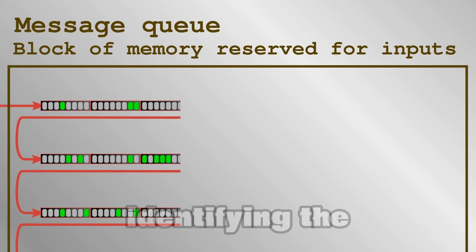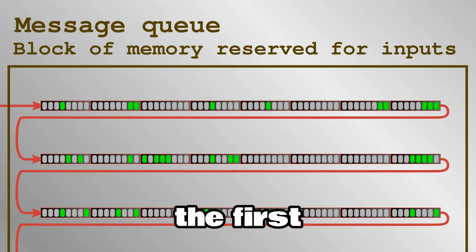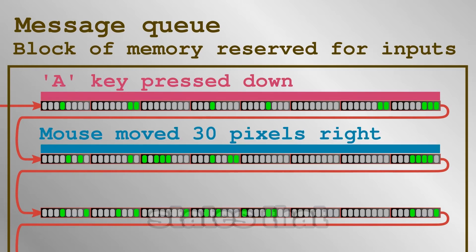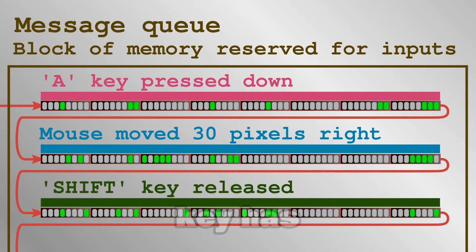There are many input devices out there, but the way a computer deals with inputs is usually the same. The inputs leave so-called messages in memory, which are groups of bytes of preset length identifying the device and what exactly the input consists of. For example, a message queue may have in it three messages of eight bytes each. When decoded, the first one states that the A key has been pressed down, the second states that the mouse has moved 30 pixels to the right, and the third that the shift key has been released.